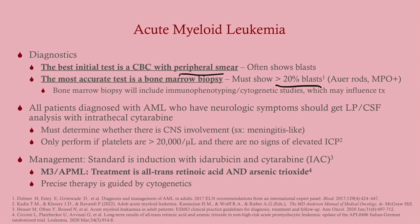Best initial test is peripheral smear, which often shows blasts; bone marrow biopsy is most accurate, requiring more than 20% blasts plus the AML markers including Auer rods and MPO. All AML patients with neurologic symptoms need a lumbar puncture with CSF analysis and intrathecal cytarabine — contrast this with ALL where LP is done on everybody and intrathecal methotrexate is used. The LP determines whether there is CNS involvement; be aware that these immunocompromised patients can also have true meningitis, so send cultures.